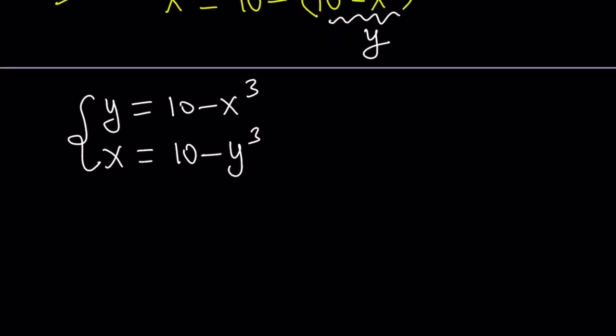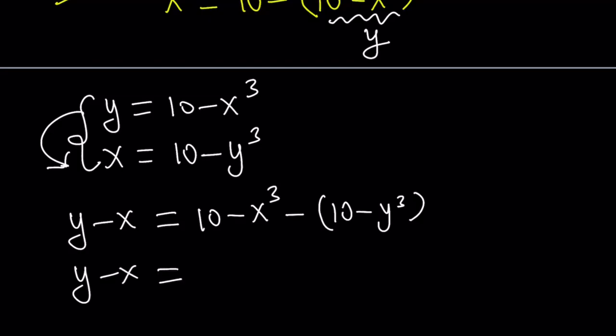So we can solve this system. How? By way of subtraction. So let's go ahead and subtract these equations. Y minus x equals 10 minus x cubed minus 10 minus y cubed. Y minus x equals 10 cancels out. We end up with y cubed minus x cubed.